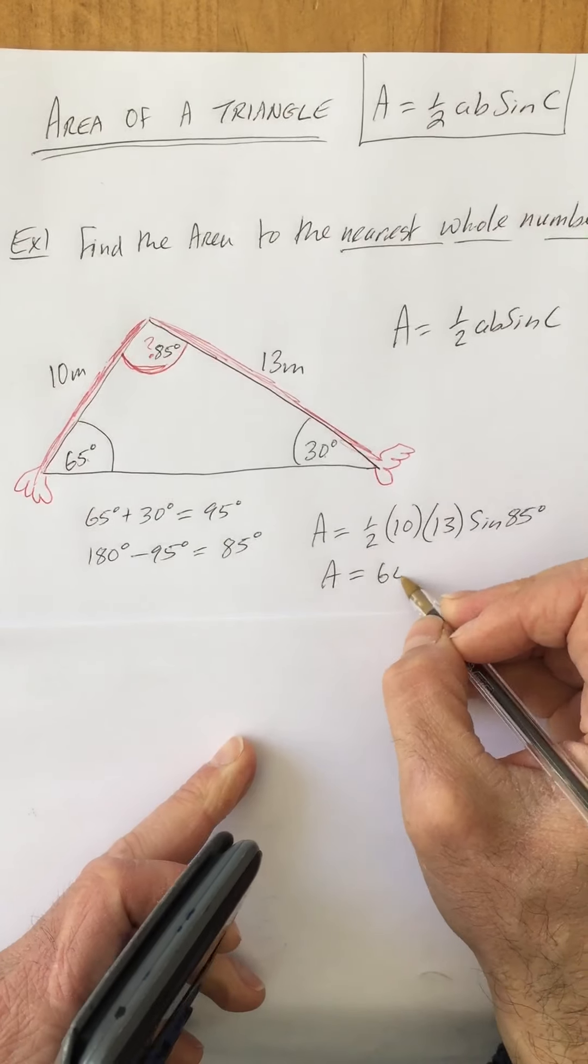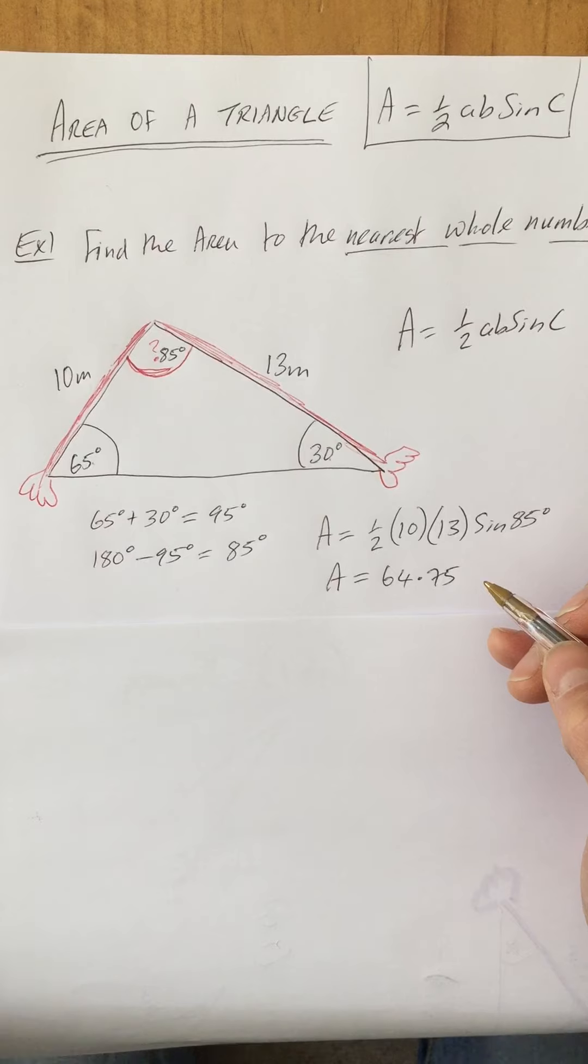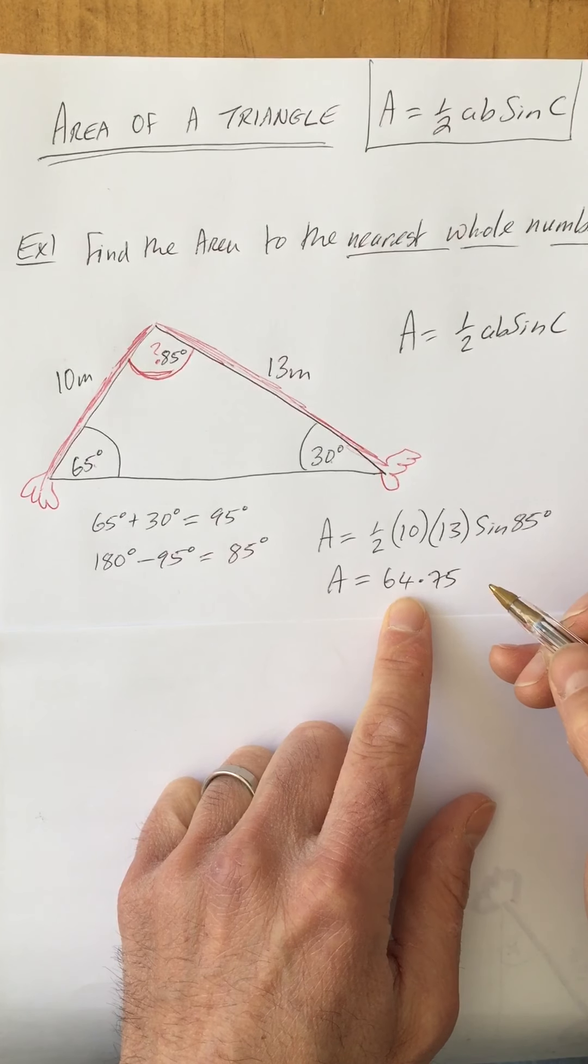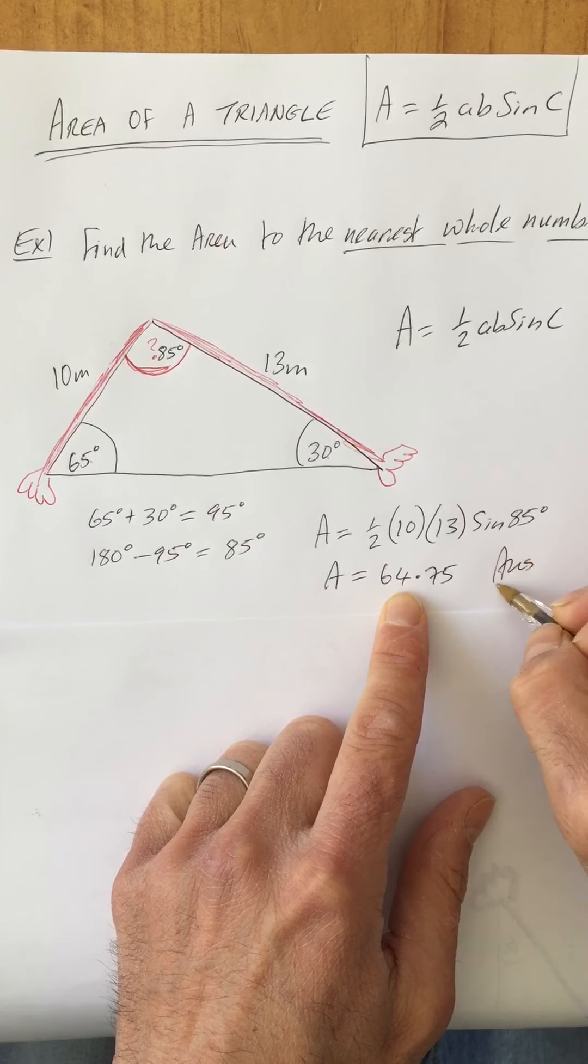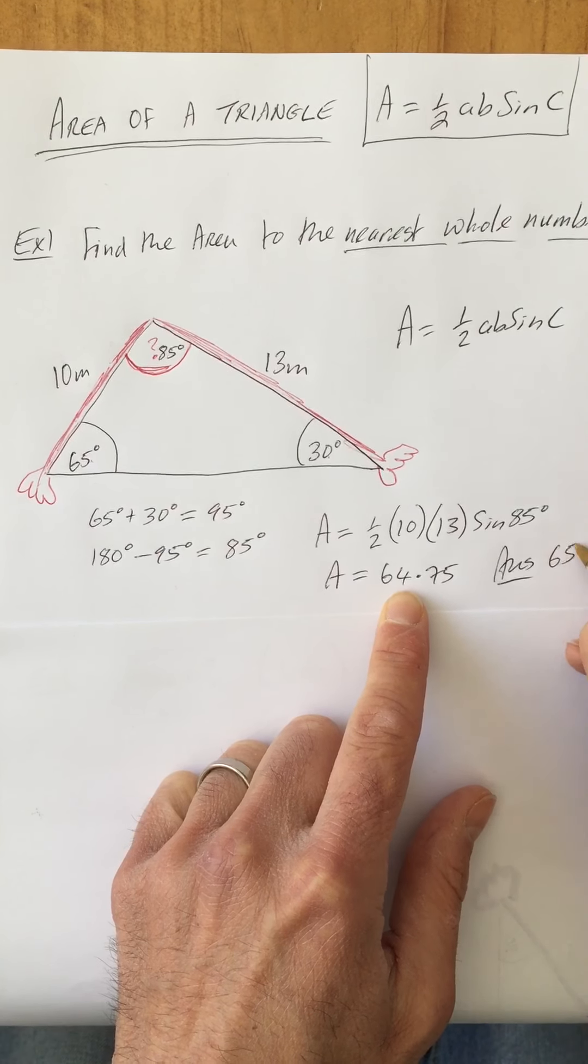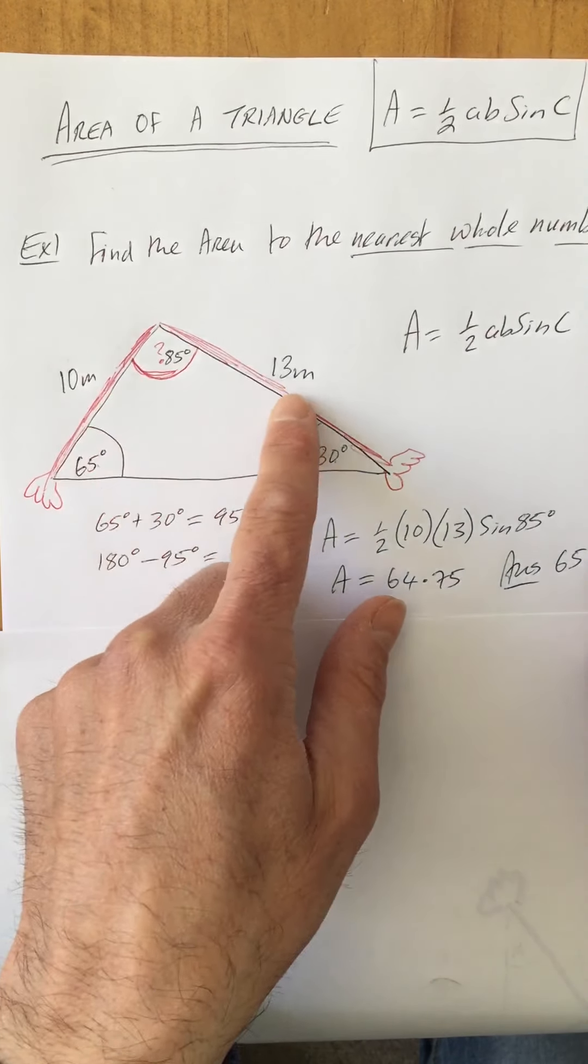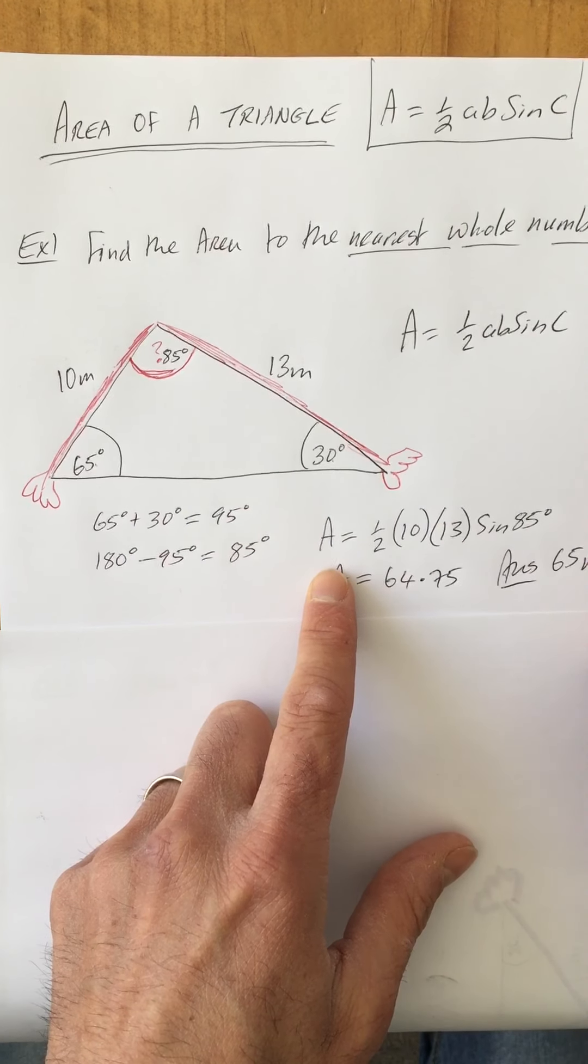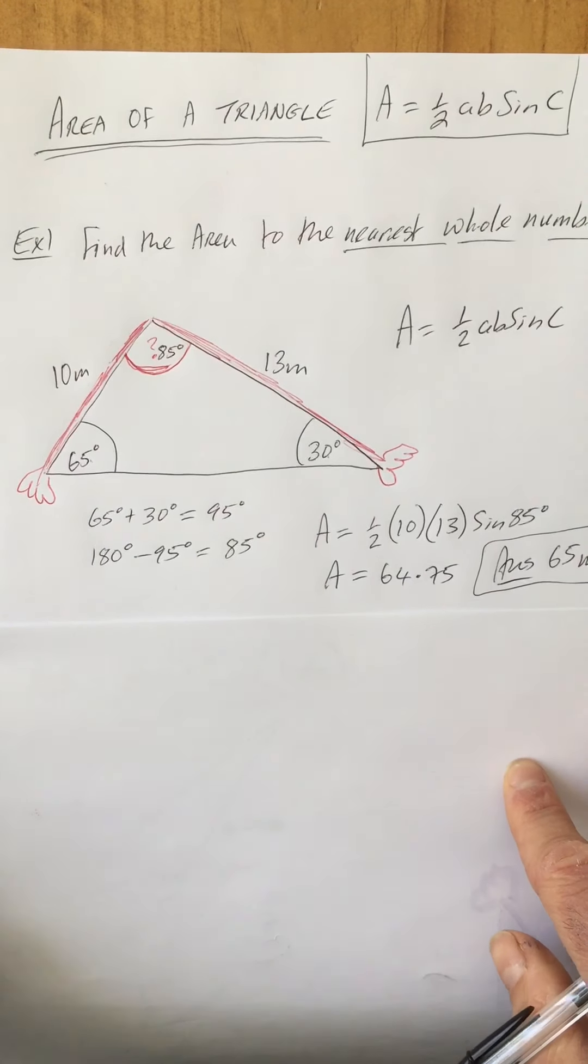So let's write 64.75, but they want the answer to the nearest whole number. So is it 64 or is it going to be 65? The answer is 65. And don't forget to put your units in—because we're measuring in meters, the area is meters squared. So there is the area of this particular triangle.